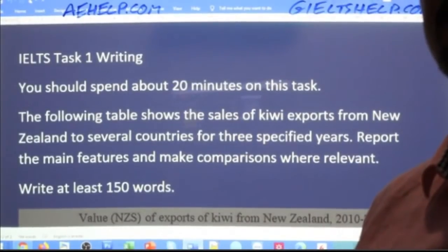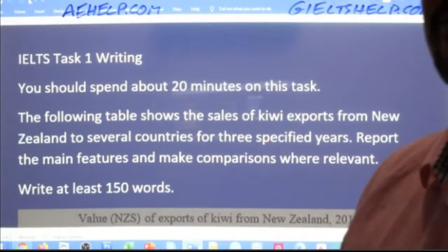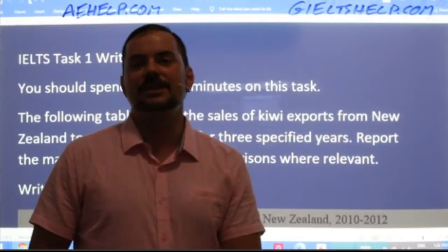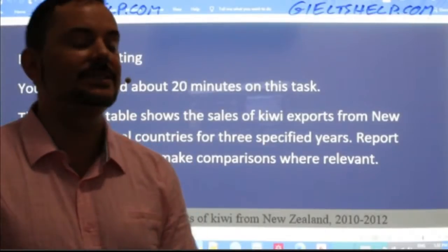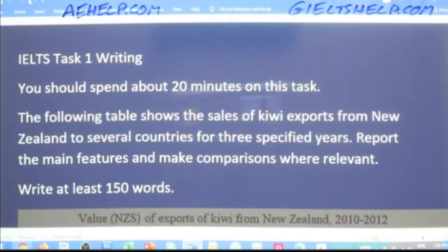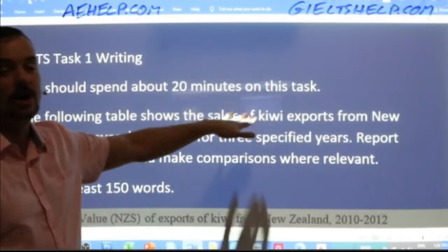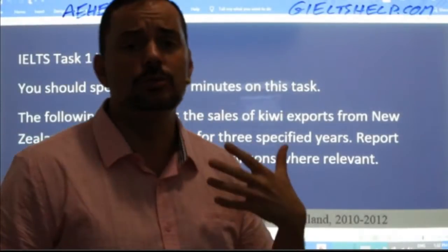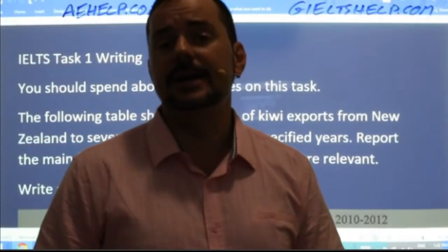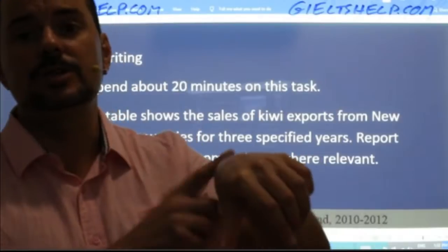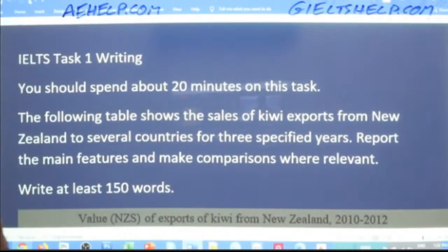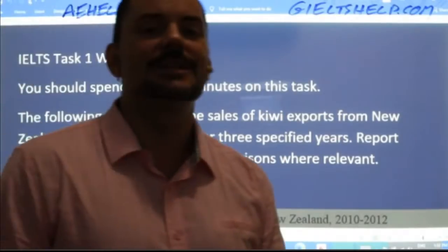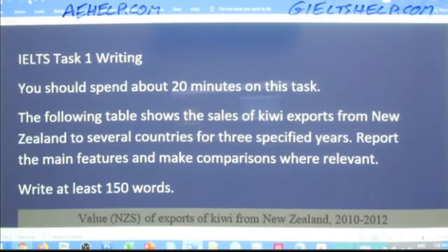You just finished the listening section and the reading section. You're about two hours into this exam, feeling good and confident. Now you open up the writing section. You should spend about 20 minutes on Task 1. In the paper-based exam they do not tell you when 20 minutes is up, so keep an eye on the clock — wear a wristwatch if you have one. Spend only 20 minutes on Task 1 and 40 minutes on Task 2.